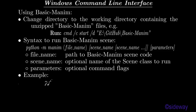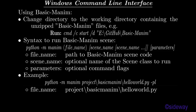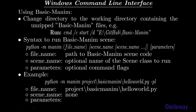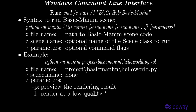Example: python -m manam project/basic_manam/hello_world.py -pl. File name: project/basic_manam/hello_world.py. Scene name: none. Parameters: -p (preview the rendering result), -l (render at low quality for trial run).